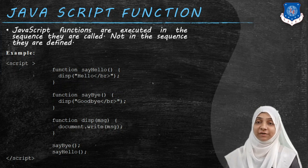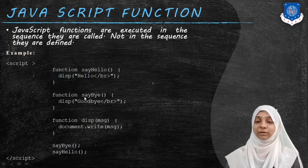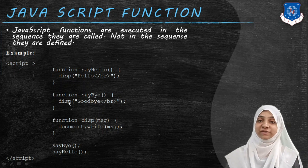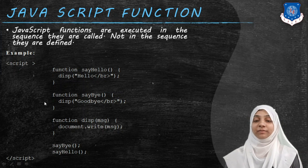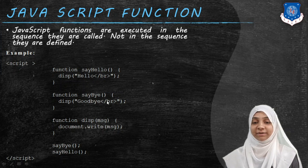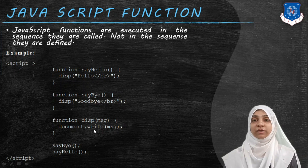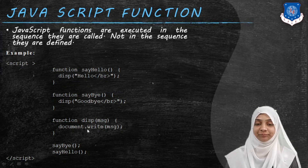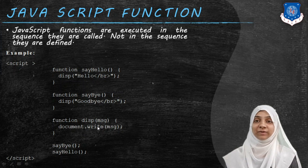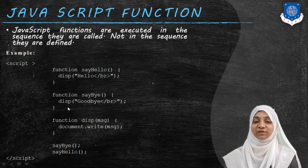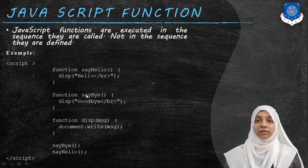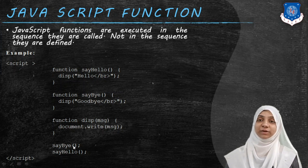These functions are not executed unless and until we call them. We first make a call to sayBye, so control goes to sayBye. Within sayBye we call display with parameter 'goodbye', so control goes to display, the parameter is stored inside message, and 'goodbye' with one break line gets printed over the HTML page using document.write. After executing that statement, control goes back to its calling location, and since sayBye has completely executed, control returns to where it was called from.